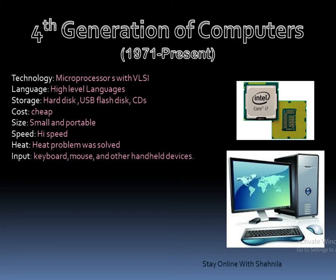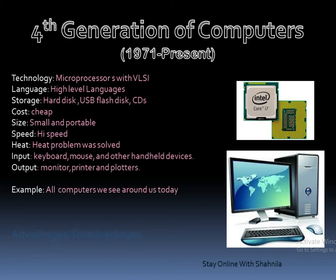For input, different devices are used such as keyboard, mouse, scanners, microphone, and light pen. For output, monitors, printers, and plotters are used. All computers we see around us today are examples of fourth generation computers. The main advantage is that they are easy to use, very user-friendly, and used in almost every field of life.